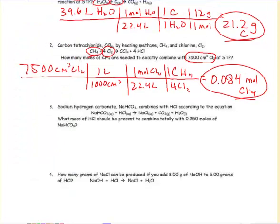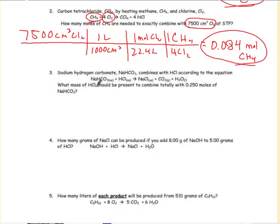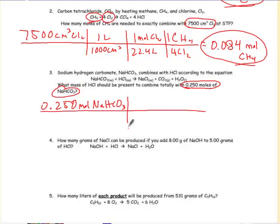All right, the third one. What mass of HCl should be present when you combine totally? All the words, the number, the unit, and what it is of. It's really all that matters. The other words are just there for a reason, but they don't really affect how we solve the stoichiometry problem. All right, so first step in stoichiometry is get moles. I already have moles. I don't have to do that. Done for me.